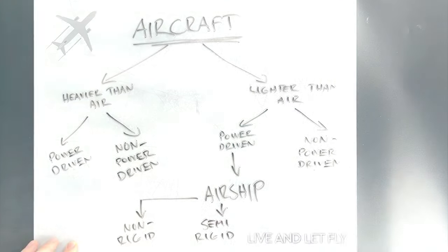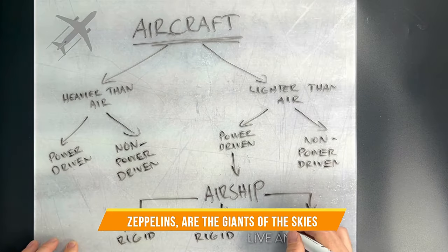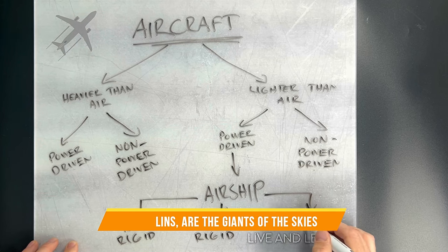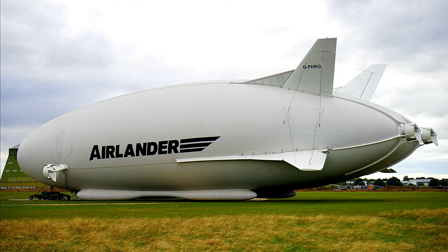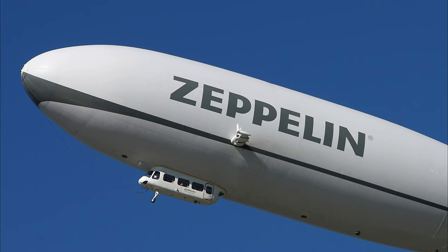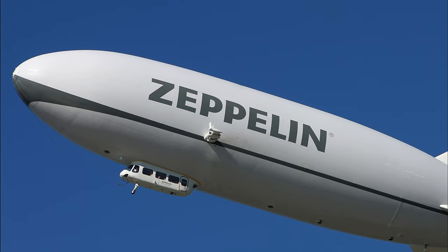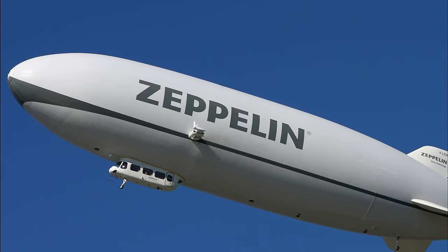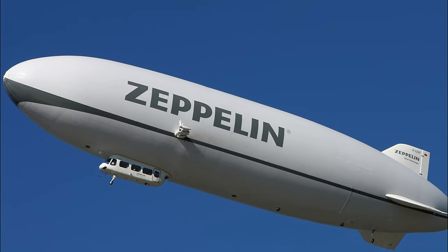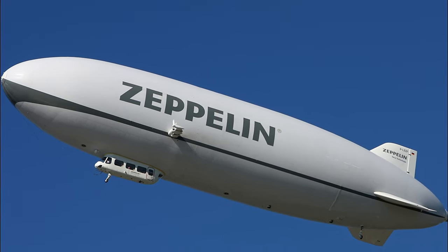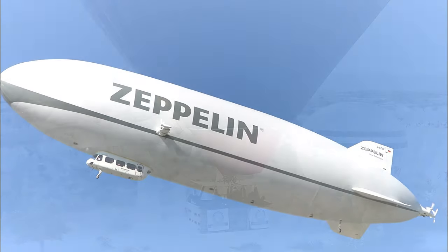Rigid airships, often known as zeppelins, are the giants of the sky. These magnificent aircraft feature a rigid internal structure that supports the envelope. Historically, zeppelins were used for long-distance passenger travel and military operations. While their role in aviation has evolved, they remain a symbol of luxury and grandeur in the annals of flight.